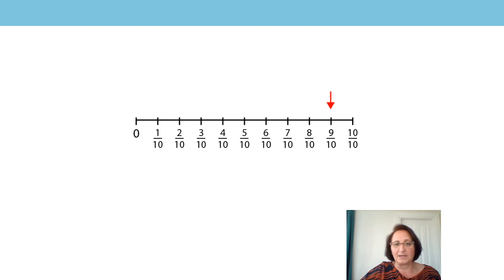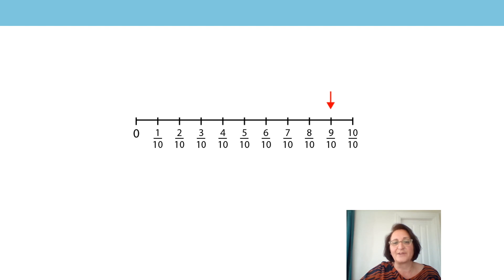Have a look at this arrow. Where is it pointing to? That's right — it is pointing to the number nine tenths. It is pointing to the exact number and point on the number line, not pointing below, not pointing above. It's at the exact point, and therefore this arrow is showing nine tenths.